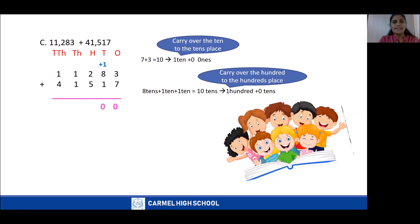We write 0 in the tens place and carry 1 to the hundreds place. Now we add the hundreds place: 1 plus 2 is 3, plus 5 is 8. Next, add the thousands place: 1 plus 1 equals 2. Then the ten-thousands place: 1 plus 4 equals 5. The answer is 52,800.